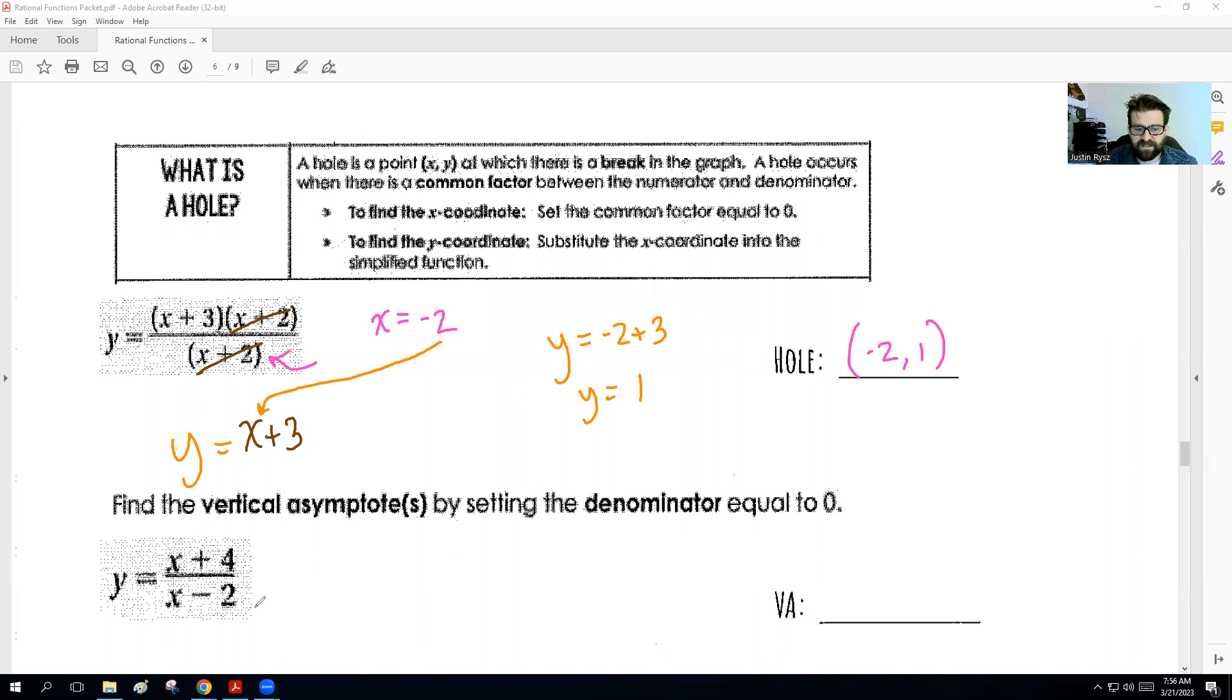Now, a vertical asymptote is when the denominator equals 0, and that denominator does not get canceled out. So we just have x plus 4 in the top, x minus 2. They don't cancel out. So we just have the denominator would be x equals positive 2. So that does not get canceled out. We would have a vertical asymptote at x equals positive 2. So you can see here, the holes get canceled out. The vertical asymptotes are the ones that don't get canceled out.